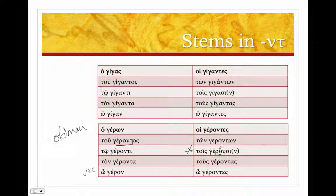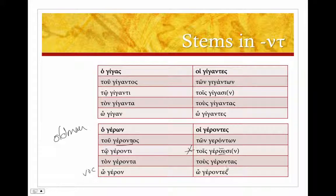This is, again, that compensatory lengthening. It doesn't become an omega. It becomes an u, omicron, upsilon. Gerusin, tus gerontas, o gerontas.